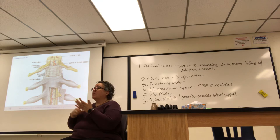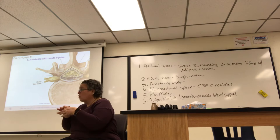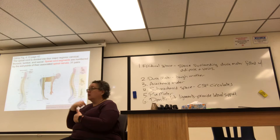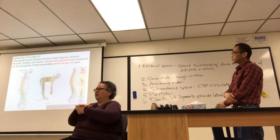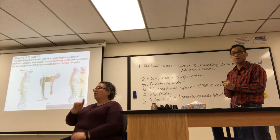Spinal nerves have names just like the vertebrae, and the spinal cord is divided into four regions: cervical, thoracic, lumbar, and sacral. There are 31 pairs of spinal nerves exiting the vertebral column.